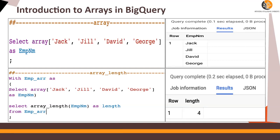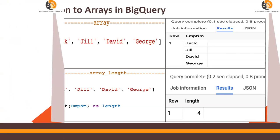Now it's a very interesting concept: arrays enable a table within a table in BigQuery. Did you get confused? I'm talking about arrays enabling a table within a table — let's see that in the next section.